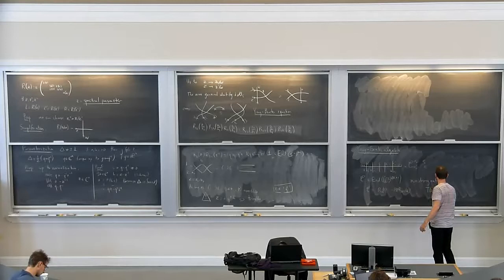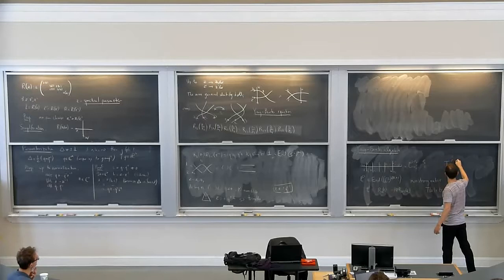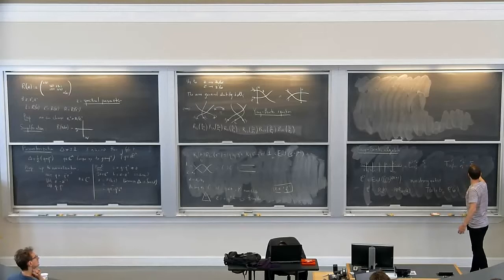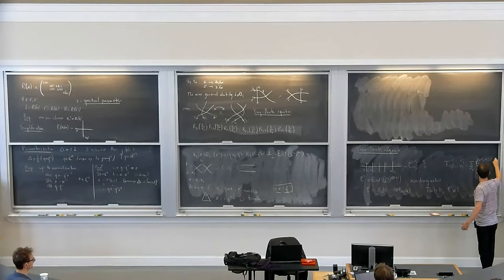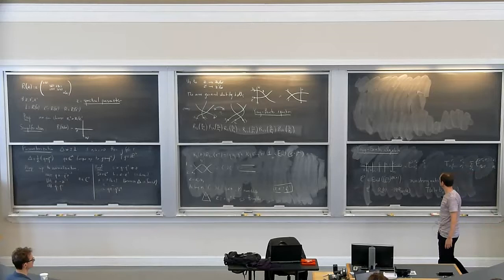The key point is that these monodromy matrices satisfy, as a consequence of the RLL relation or the Yang-Baxter equation — these are equivalent — a certain system of relations that essentially define the Yang-Baxter algebra. Let me write these relations. They are called the RTT relations — the same relation as RLL, but where L has been replaced by T.